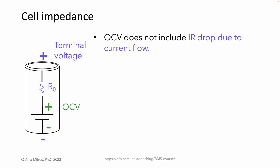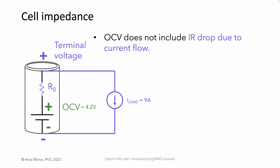Let's do an example. Imagine a current load. 4.2 volts is a typical OCV for a fully charged NMC cell. Assume a 15 milliohm cell impedance, realistic for a single cylindrical cell. Calculate the terminal voltage from the OCV minus the IR drop across the cell impedance. The terminal voltage is 135 millivolts lower than the OCV in this scenario.